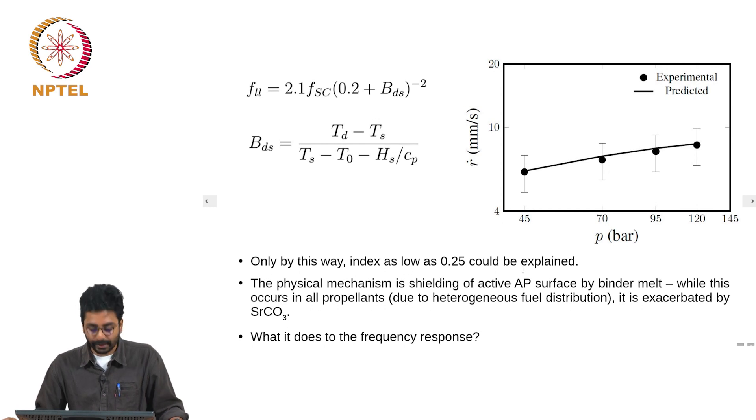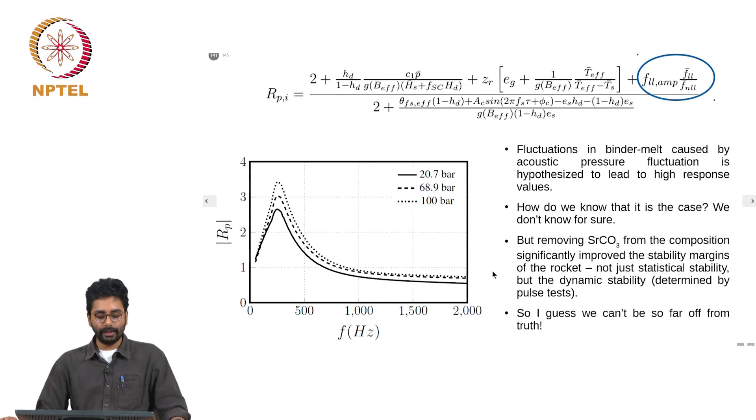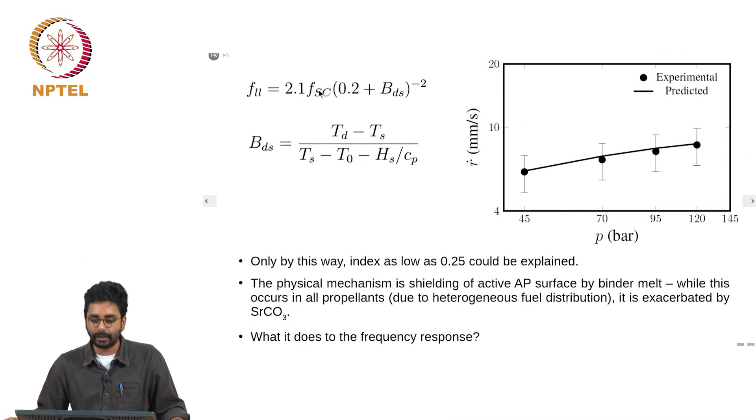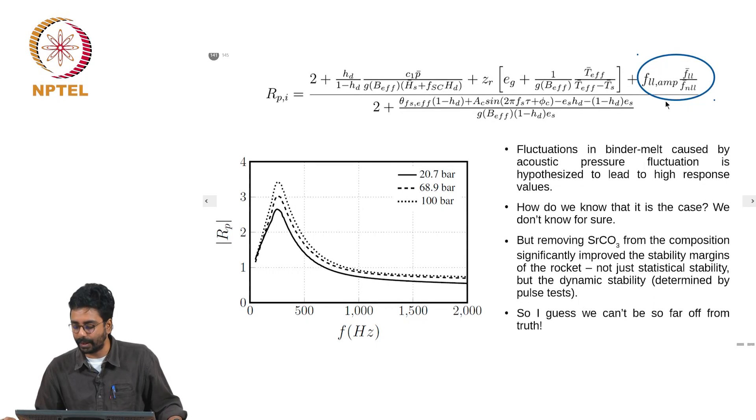What does it mean to the frequency response? Because of the addition of liquid layer, an additional term appears in the response function equation. Fluctuations in binder melt caused by acoustic pressure fluctuation is hypothesized to lead to high response values. Only by accounting for this effect, response function as high as 3 can be explained.